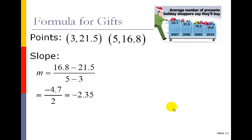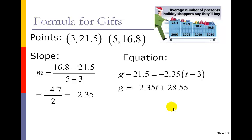So it doesn't matter how you calculate your time, whether you use 3, 5 or 2008, 2010, you're taking the difference, you're still getting the two-year difference. Then I pick the data point. In this case, I took this data point 3, 21.5. I took the t value, the time, I plugged in the 3. I take the gift value and I plugged it in there for the 21.5 there.